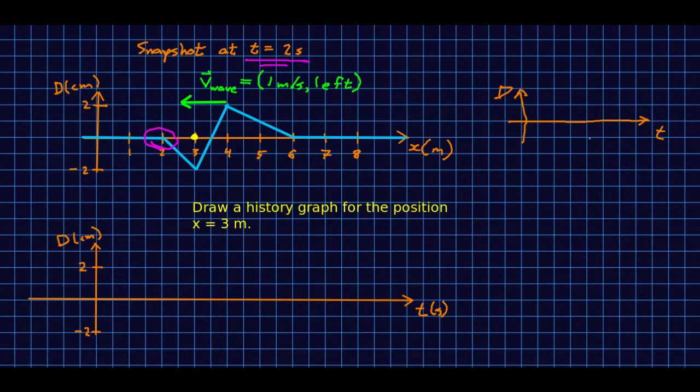For our displacement versus time graph, if you think about any point, now the point we're interested in is x equals three, but no matter what point you think about, recognize that the leading edge of the wave is this piece. So whenever the wave gets to a place, the first thing that happens to a piece of this string, or whatever it is as the wave arrives, is it goes down as this piece arrives at the location you're looking at. Then it's going to go up, and then it's going to slowly subside back to zero displacement. We know that our history graph is going to look something like this. Now we just have to get it scaled right.